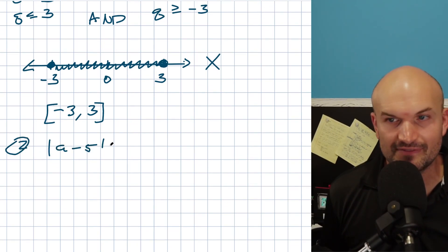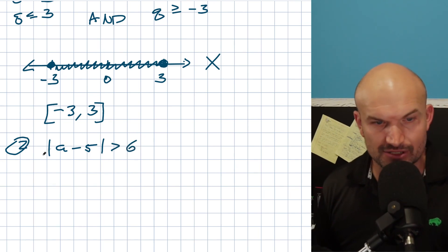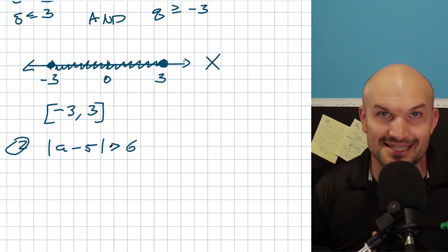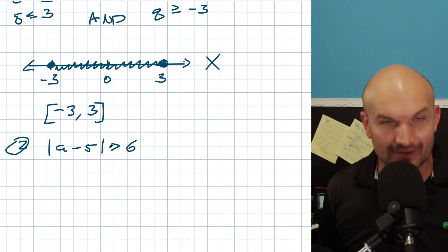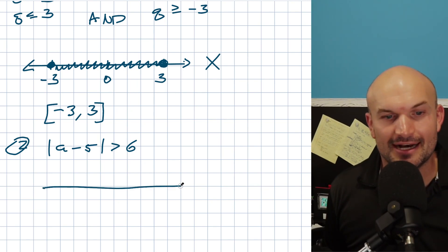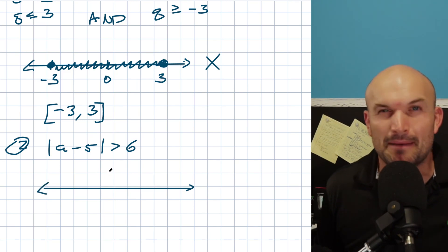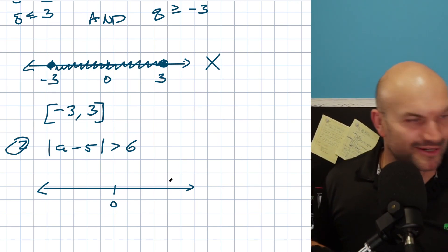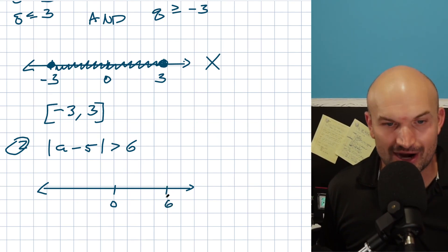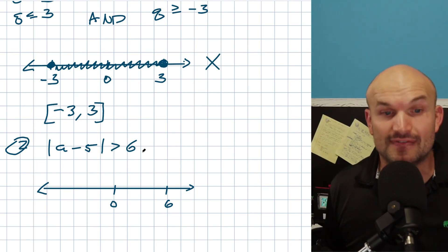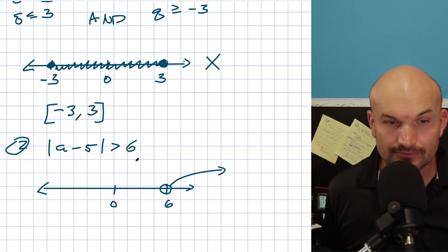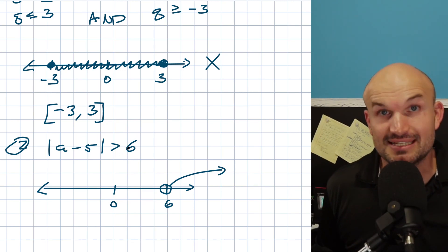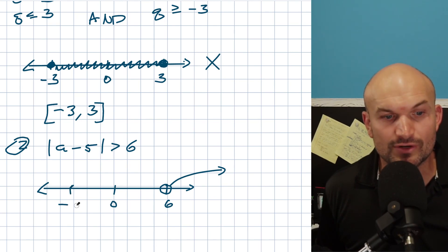Now let's look at another example: the absolute value of a minus 5 is greater than 6. We have our absolute value isolated but now we have the greater than symbol. If you recognize it, greater than is going to be the or case — and that is correct. But again, think about this using the number line. Here's 0, and here's 6. Whatever's inside the absolute value — a minus 5 — has to be greater than 6, so it's going to be an open circle going that way. But remember, absolute value represents absolute distance from 0, so you can also go in the negative direction.